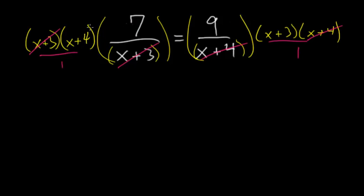So then I'm left with 7 times (x+4) on the left. So 7(x+4), and this is equal to 9 times (x+3).